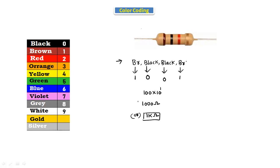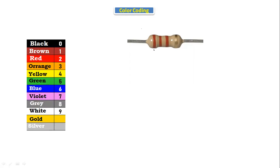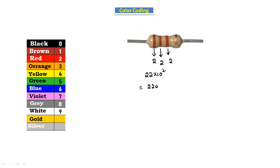Here is another example. This resistor has three color bands: red, red, red, and the last color is gold or silver. Red indicates 2. Applying the formula: 22 × 10^2 = 2200 ohms. Converting to kilo ohms, we get 2.2 kilo ohms. Any resistor with red, red, red bands has a value of 2.2 kilo ohms.